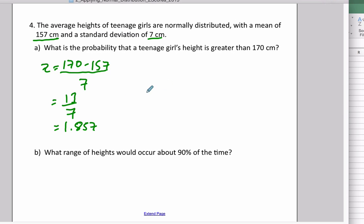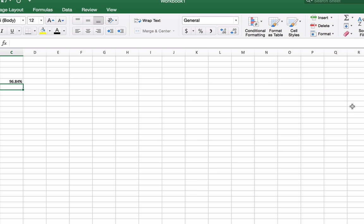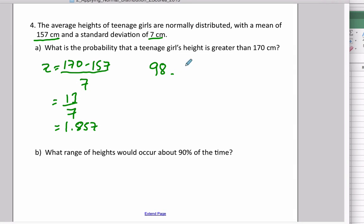So if we go back here, this is the 96.8 percentile. We're asked, what's the probability that X is greater than 170?